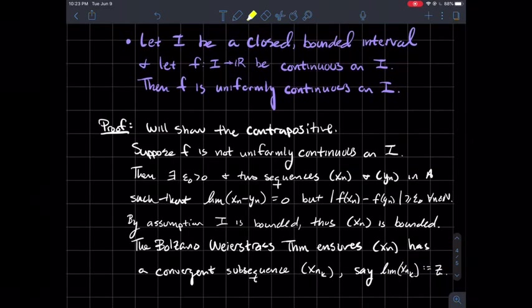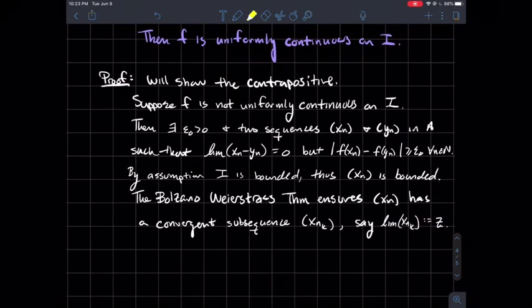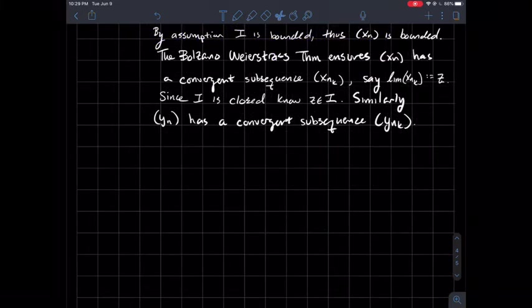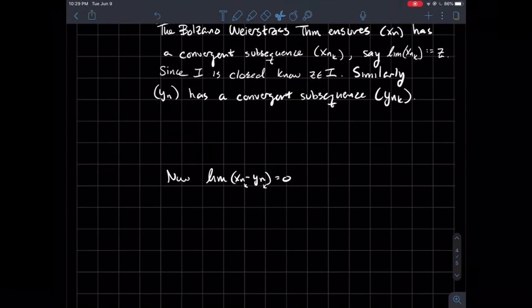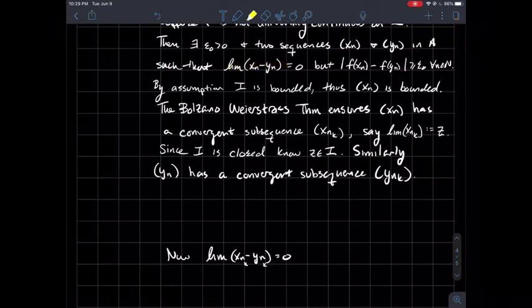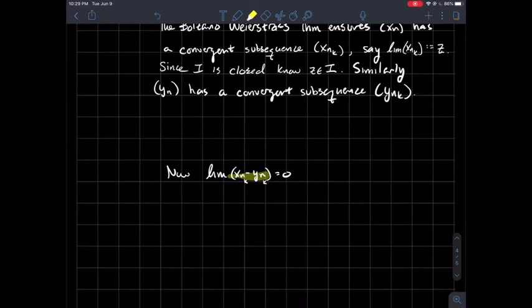Now, since this interval I is closed, this old z can't live anywhere. He's got to live in that interval I. So since I is closed, z itself has to live in I. Similarly, y_n has a convergent subsequence y_{n_k}. Let's look at the difference limit x_{n_k} minus y_{n_k}. That has to be zero, since that was true up here for all my n. That limit should be zero. Eventually, these two subsequences should get next to each other too, is what this is trying to say.